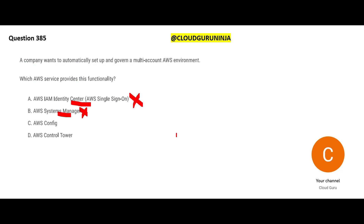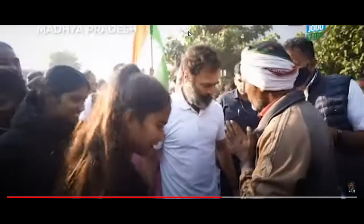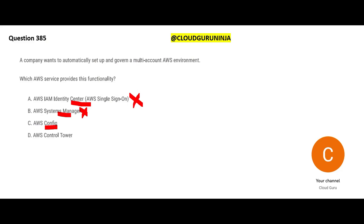Option C talks about AWS Config. Imagine you have EC2 instances configured with high compute capacity - everything was fine, but one day you find the resources are much smaller. Who did that? When did they do it? Did they take approvals? You want to audit that - you go to Config and you can do that. AWS Config is an audit solution. Here we are not talking about audit. That leaves us with Control Tower, which totally aligns with what we are looking for, and that is our answer.